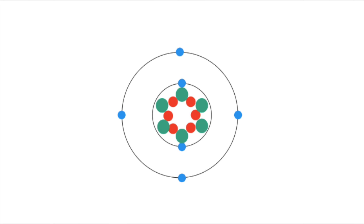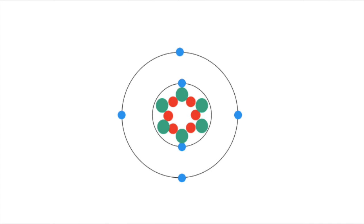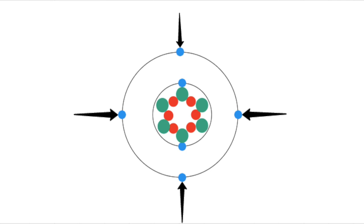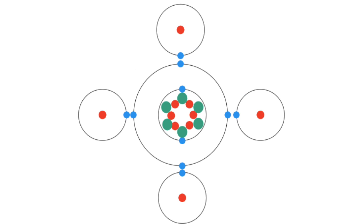Carbon is so good at making life since it has four valence, or outer, electrons. In order for non-metals to be stable, they need to have eight. So carbon has to borrow four electrons. This means that carbon can bond to four atoms at a time.